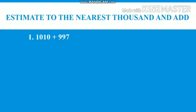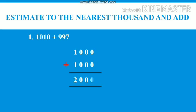Number one question is 1010 plus 997. Now we will estimate the numbers which is given. So 1010 is nearer to 1000, and 997 is nearer to 1000. Now we will add 1000 and 1000 together, then we will get 2000. So our answer is 2000.